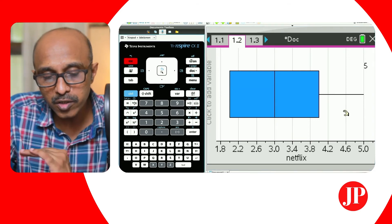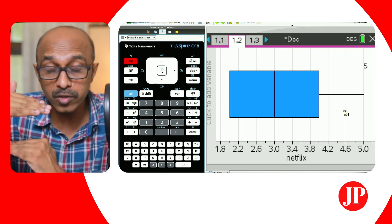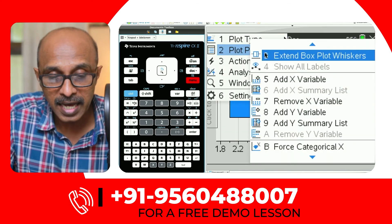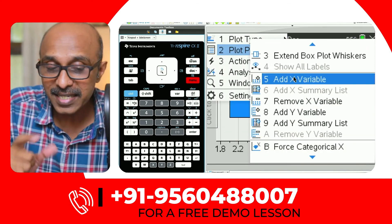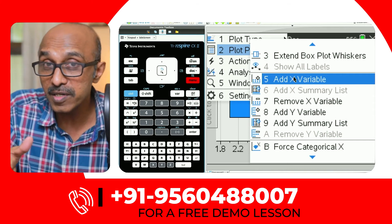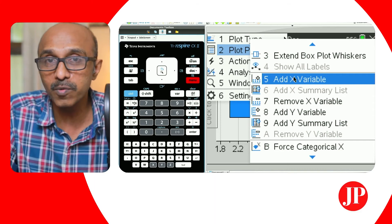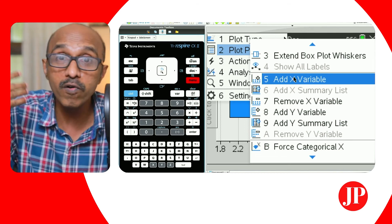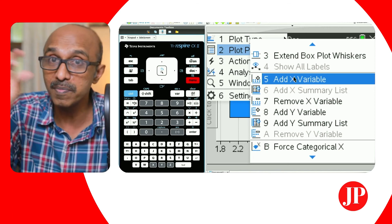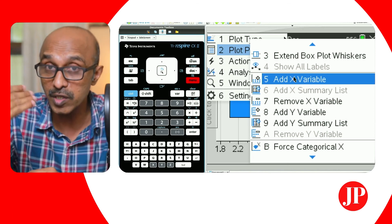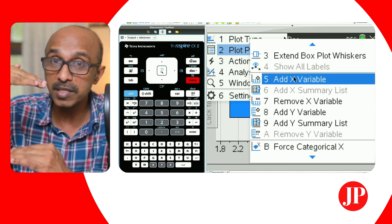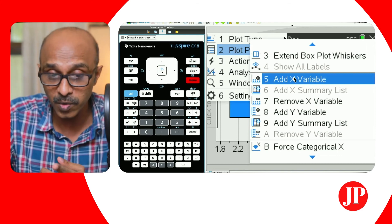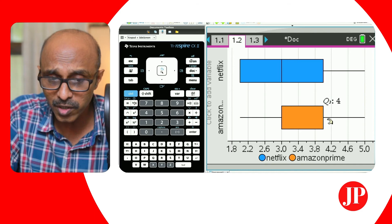So when you want to compare the two Netflix and Amazon by stacking up the two box and whisker plots, what you're going to do is that you're going to go to menu, plot properties and pick add X variable. And that is the difference between the one variable and the two variables statistics, because in the two variable, one set of data would be X and the other set of data would be Y. Whereas in this case, the two sets of data or however many sets of data that you're trying to compare, they all still be X. So you could add another X and if there was a third set of data that would be adding another X variable.